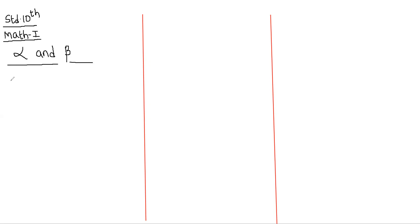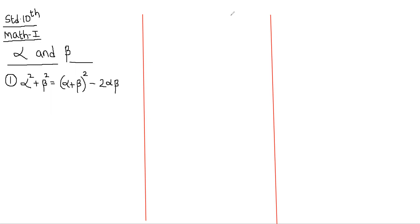Now what are those identities? The first one is: alpha squared plus beta squared is equal to (alpha plus beta) whole squared minus 2 alpha beta. Before we jump to the second identity, let us first understand where this formula came from.